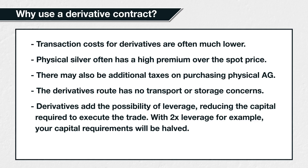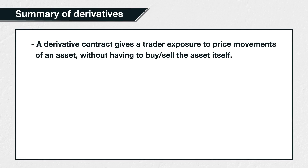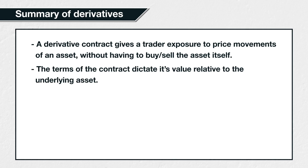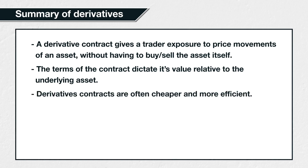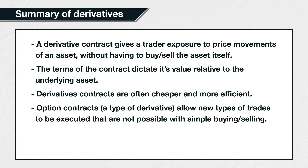We've only looked at a single simplified example so far, but the takeaway in this first lecture is that derivative contracts allow traders to structure trades that suit their needs, while also avoiding many of the disadvantages of purchasing physical assets. In summary, a derivative contract allows a trader to gain exposure to price movements of an asset without having to buy or sell the asset itself. The value of the derivative contract will be in some way tied to the price of the underlying asset, according to the terms of the contract. Trading the underlying assets directly can be expensive and inefficient — derivatives contracts can solve these problems. In the case of option contracts, which we will move on to next, they even allow completely new types of trades to be executed that would simply not be possible trading the asset directly.